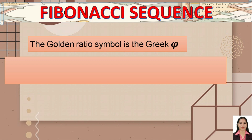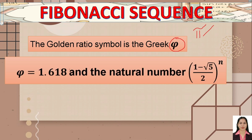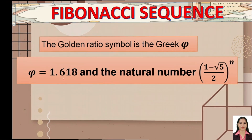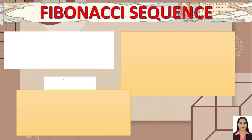The golden ratio symbol is the Greek letter phi — note that this is not the same as the pi symbol we commonly know. The value of the golden ratio phi is equal to 1.618.